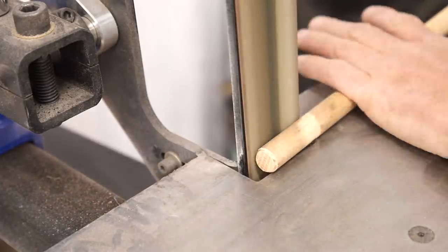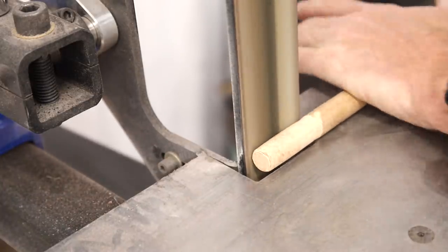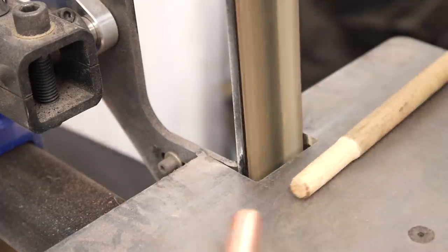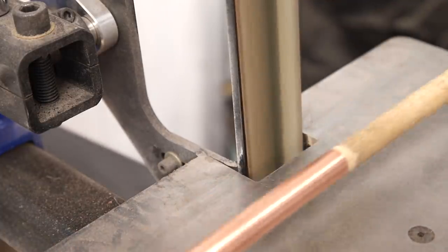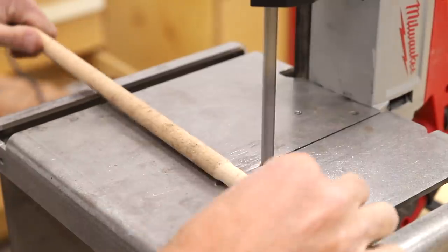Then I used the belt grinder to sand down this five-eighths inch dowel to fit inside that copper pipe. This gives me a way to only have to fill the ends of the pipe with epoxy instead of trying to fill the whole length of pipe.